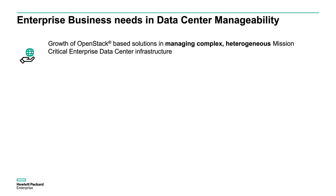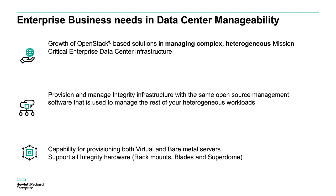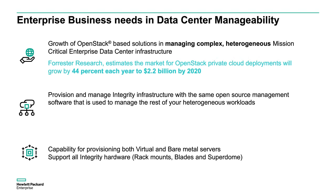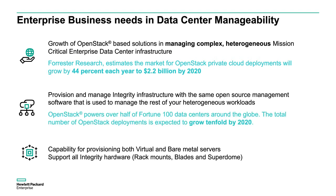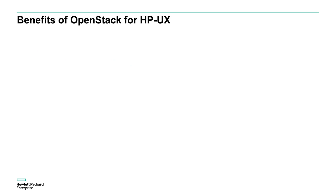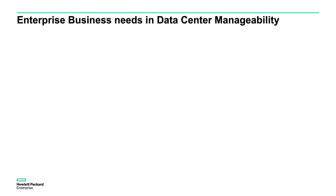The growth of OpenStack-based managing solutions for complex and critical workloads has been ongoing for quite some time. Forrester reports that new OpenStack deployments will grow around 44% year-on-year and reach around $2.2 billion by the year 2020. OpenStack users will power over half of the Fortune 100 data centers around the globe, and the total number of OpenStack deployments is expected to grow tenfold by 2020. The capability of provisioning both virtual and bare-metal servers supporting all Integrity hardware and rack mounts is supported in this OpenStack release.